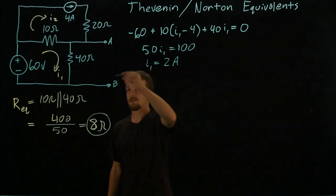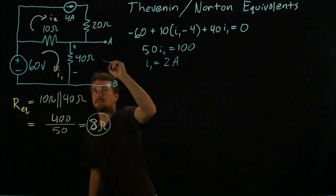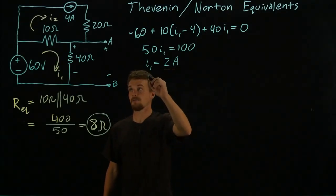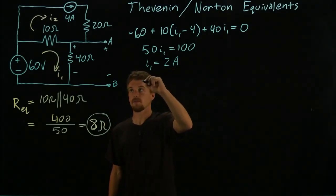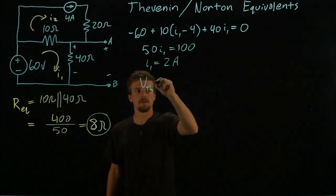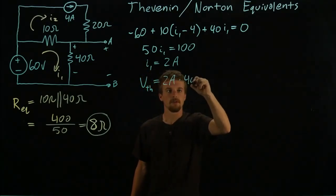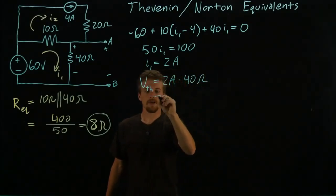So we have 2 amps through a 40 ohm resistor, so the voltage here is the same as the voltage here, which is the one we're looking for. And that will be equal to V_Thevenin will be equal to 2 amps times 40 ohms, that's equal to 80 volts.